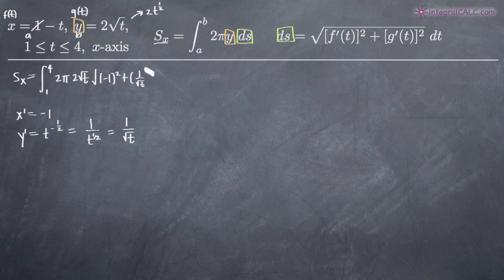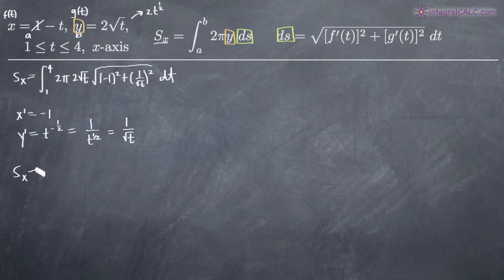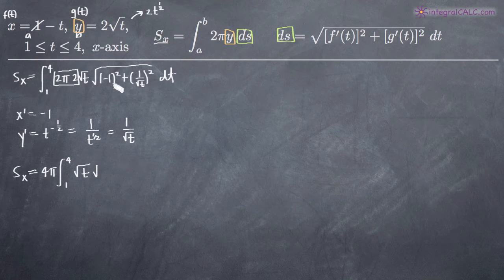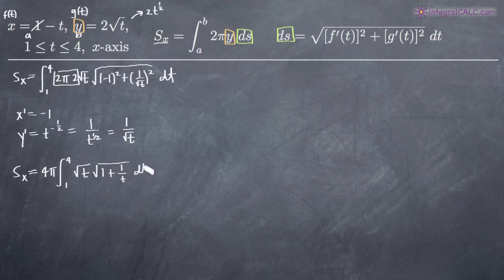So inside ds we have one over the square root of t, and we square that as well, then add dt to the end of the integral. Moving things outside: two pi times two is four pi, which comes out in front of the integral from one to four. Inside we have the square root of t, then inside the larger square root: negative one squared becomes positive one, and one over the square root of t squared becomes one over t. So we have the square root of one plus one over t.